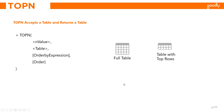The TOPN function actually accepts a table and returns a table. So what you put inside of the TOPN function is a table, and what you get outside of the TOPN function is also a table.